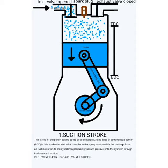In the suction stroke, the piston moves from TDC to BDC. Due to that downward movement, a negative pressure creates a vacuum in the cylinder. The vacuum pulls the air-fuel mixture — such as petrol plus air — into the cylinder.